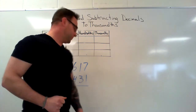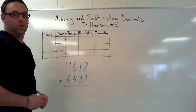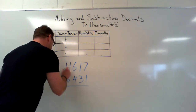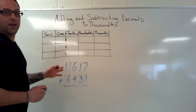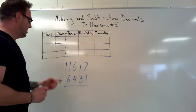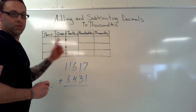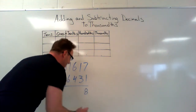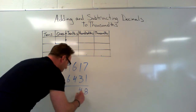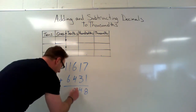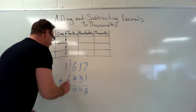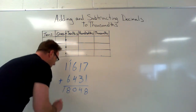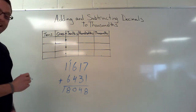Let's do a quick review about adding. If we've got two numbers that we want to add, we put them on top of each other. If I wanted to add eleven thousand six hundred and seventeen and six thousand four hundred thirty-one, we start from our ones place value: seven plus one is eight, one plus three is four, six plus four is ten so I carry my one, one plus one is two plus six gives us eight, and then we have one here.